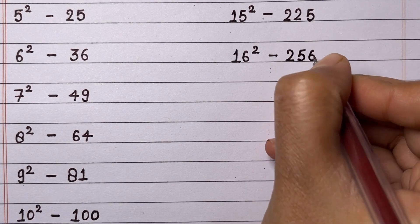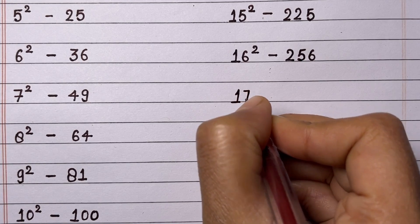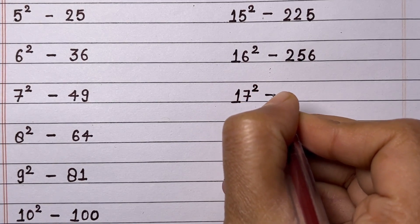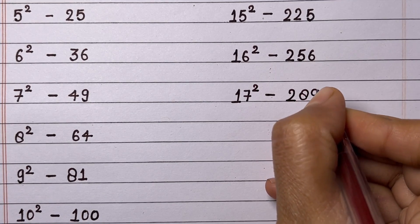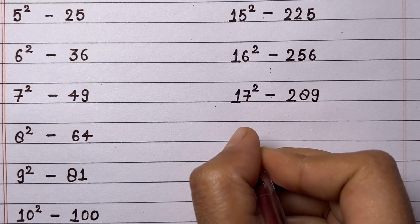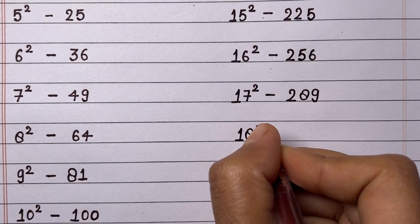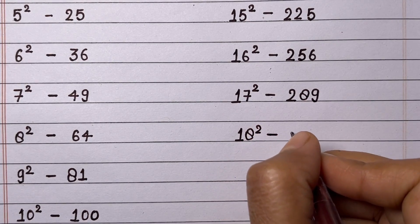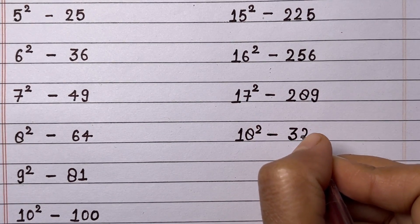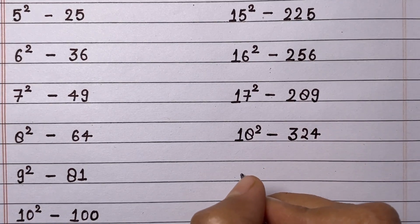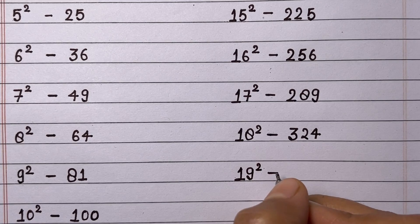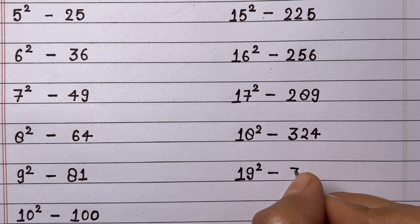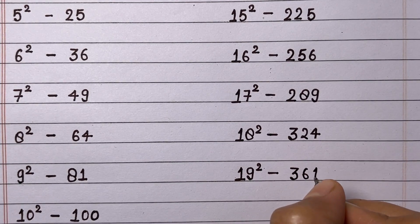Square of 16 is 256. Square of 17 is 289. Square of 18 is 324. Square of 19 is 361.